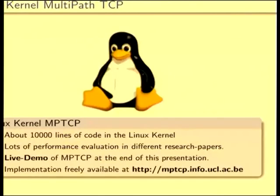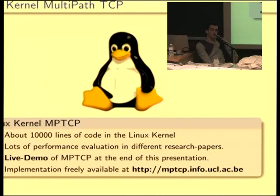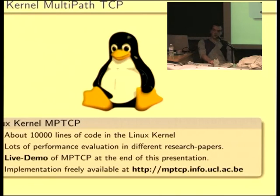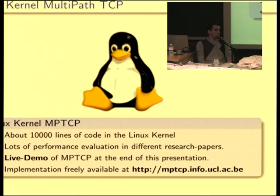At the IP Networking Lab at the UCL, we have implemented MPTCP in the Linux kernel. It's a very extensive extension to TCP — it uses about 10,000 lines of code. We have done a lot of performance evaluations and validations to prove the feasibility of our design, presented in different research papers. Our implementation is open source and publicly available on our website.